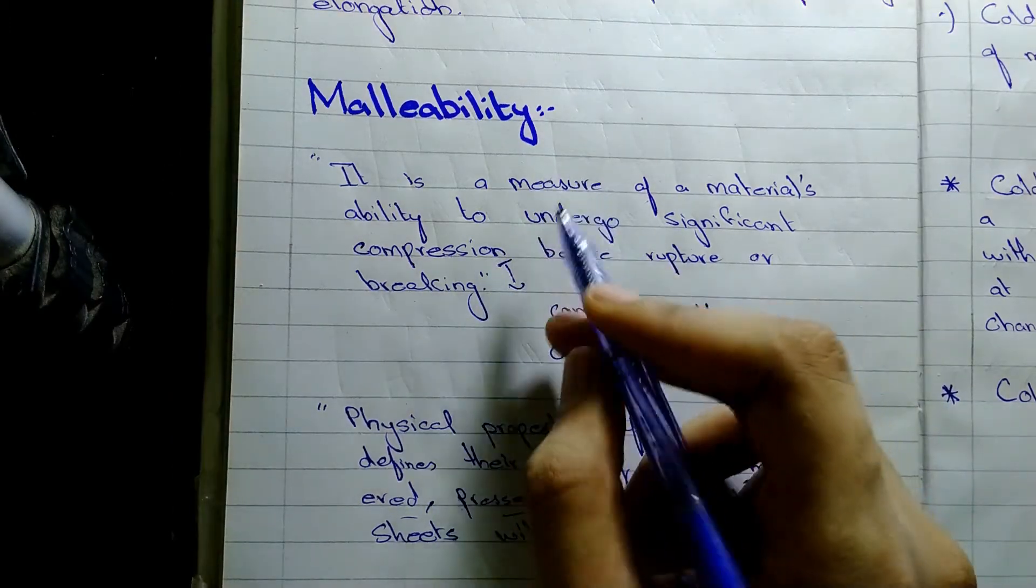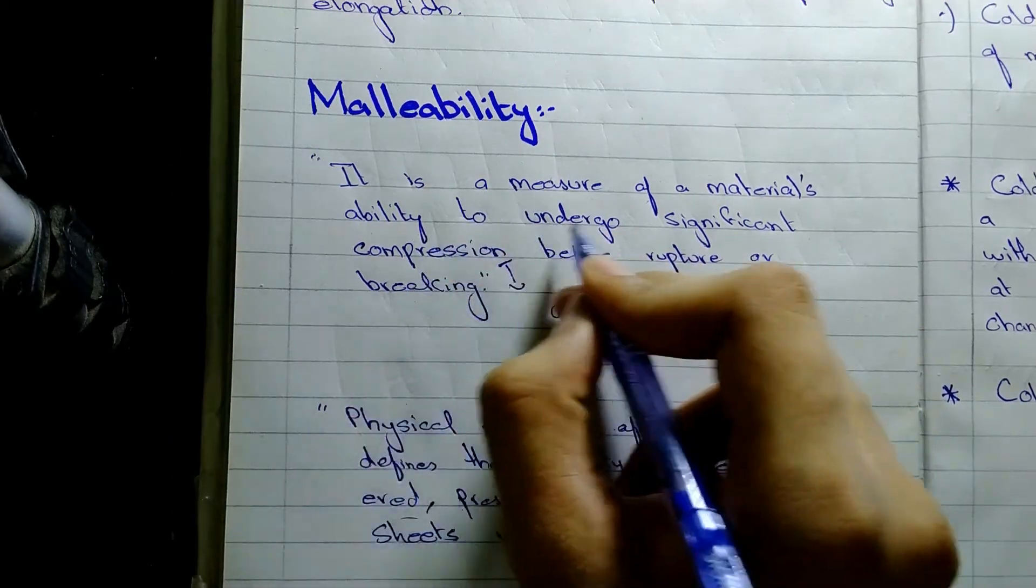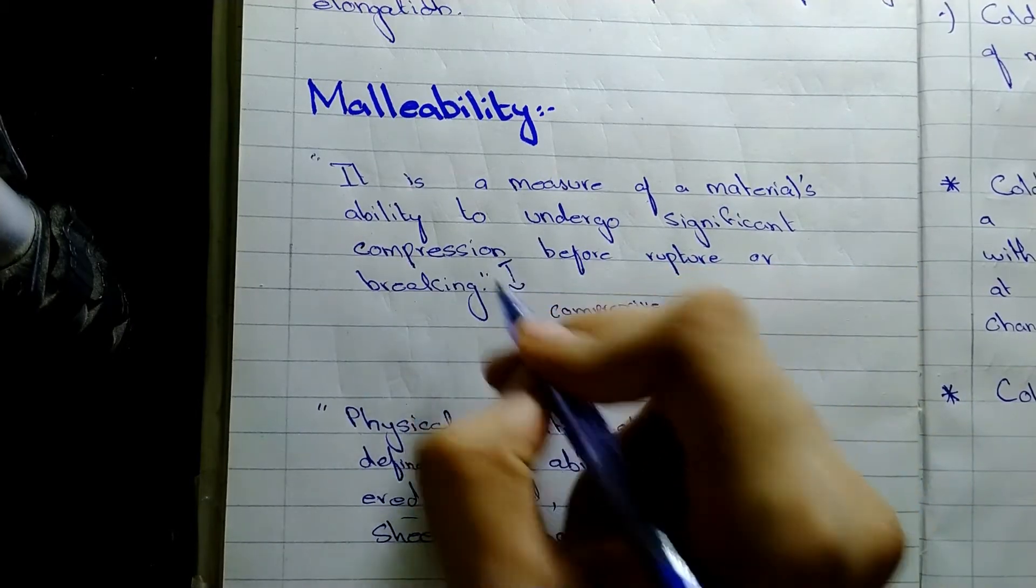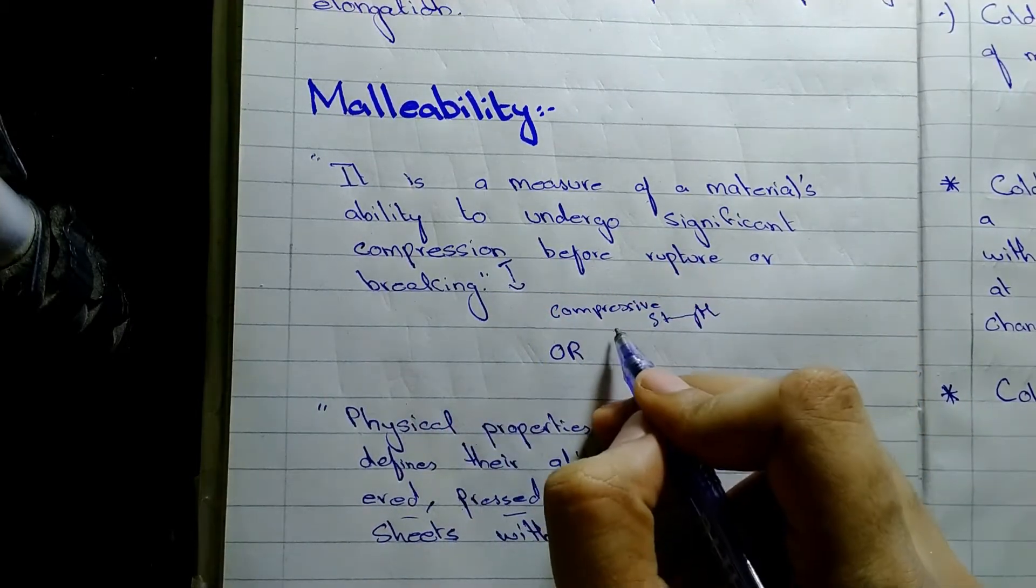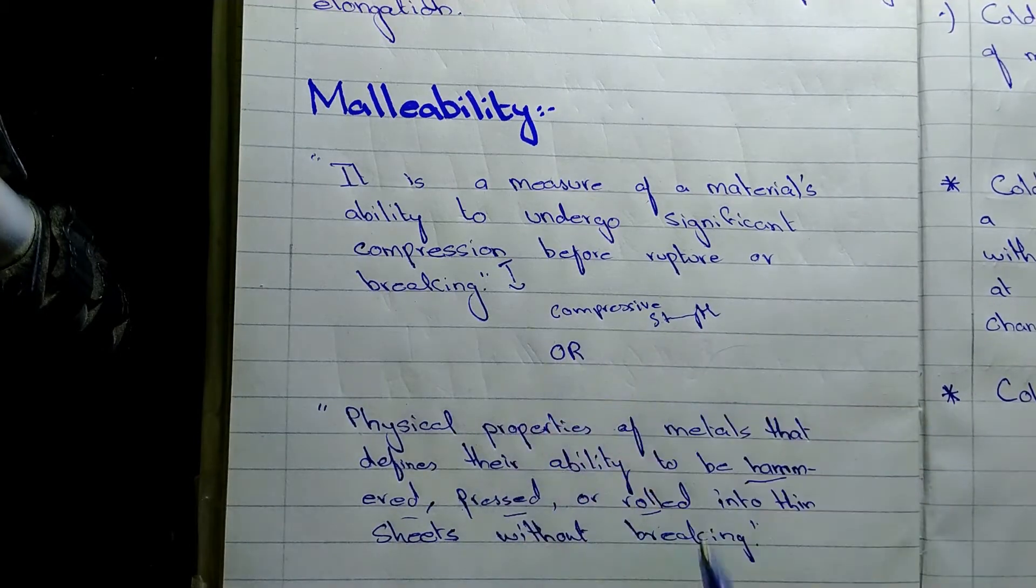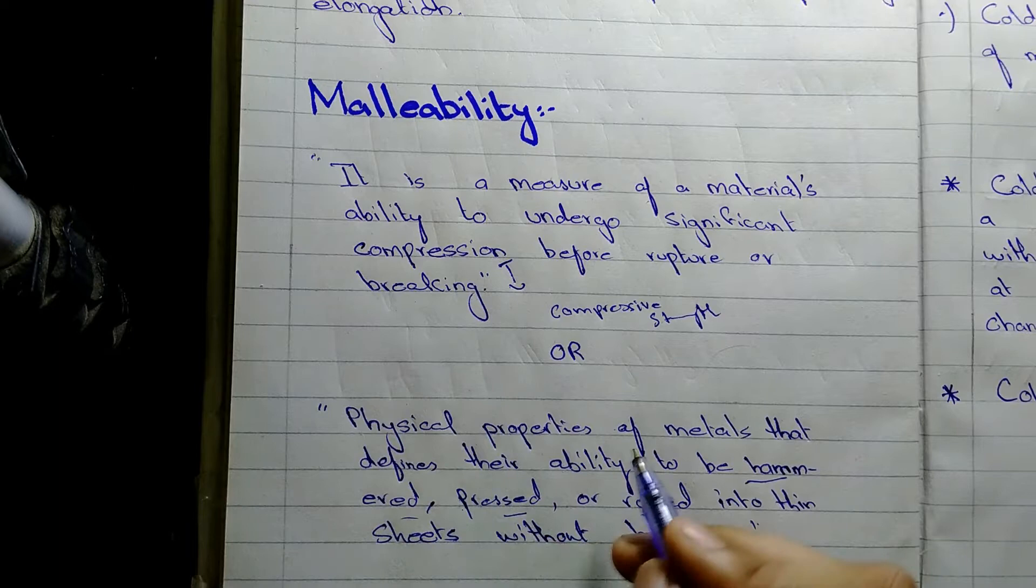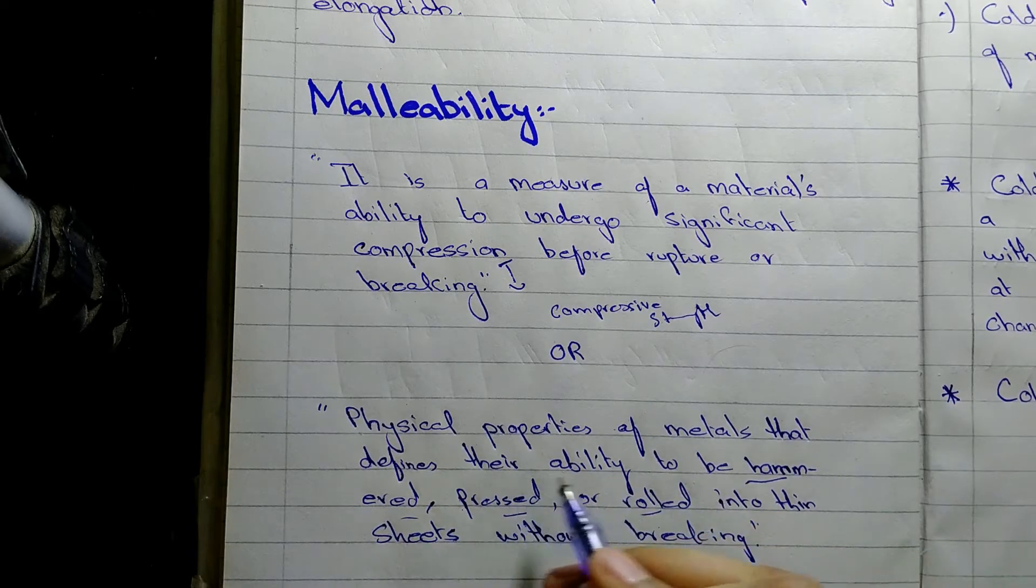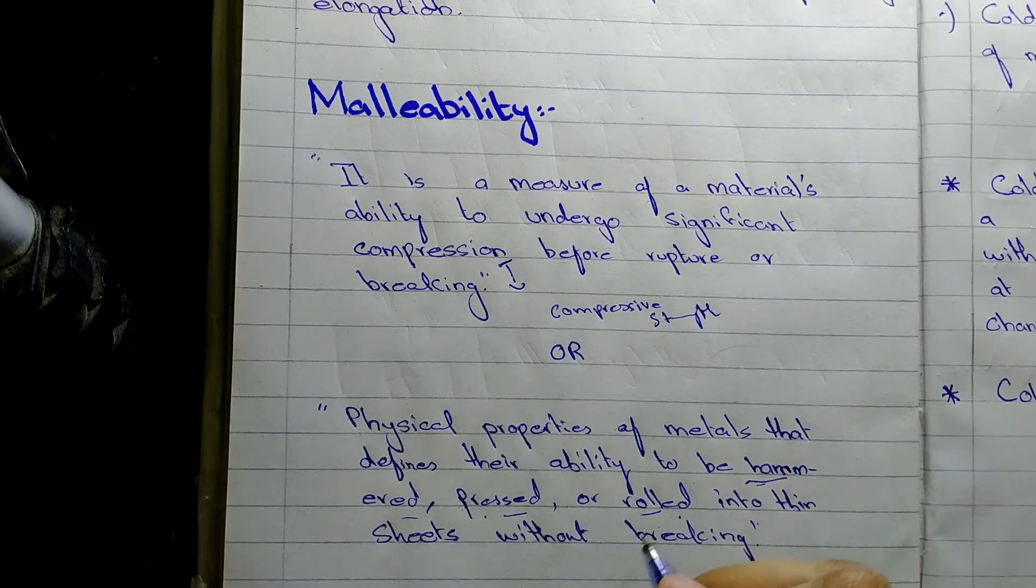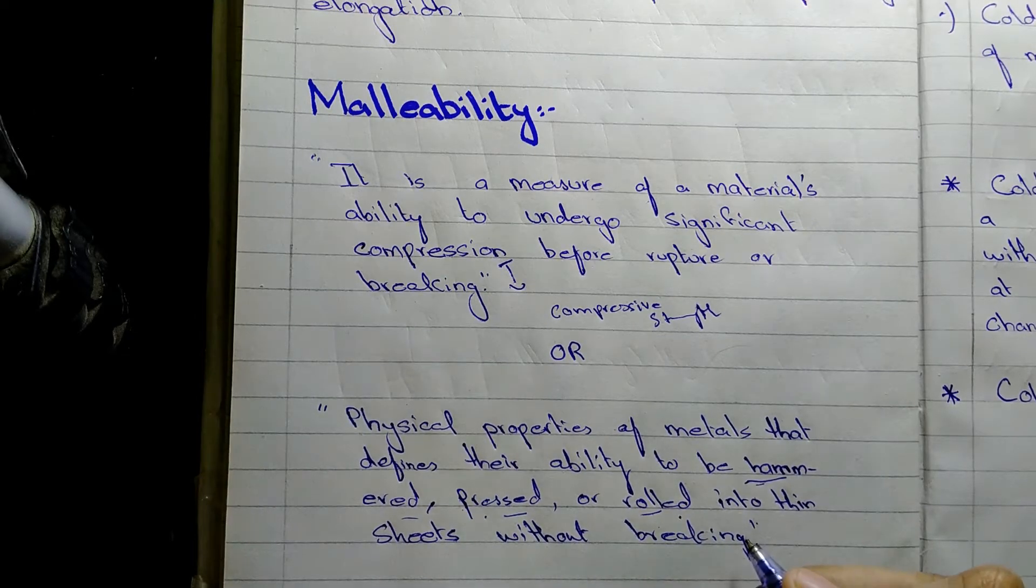Now the malleability. Malleability is defined as a measure of material's ability to undergo significant compression, which means it requires compressive strength before rupture or breaking. Another definition is physical properties of metals that define the ability to be hammered, pressed, or rolled.